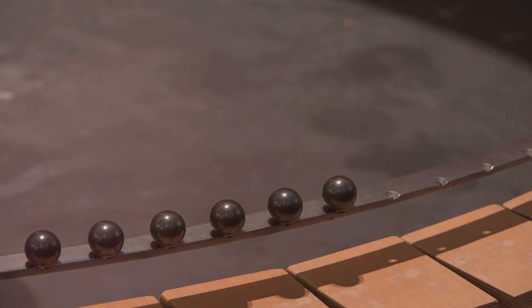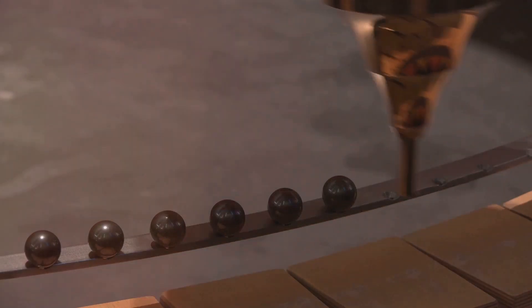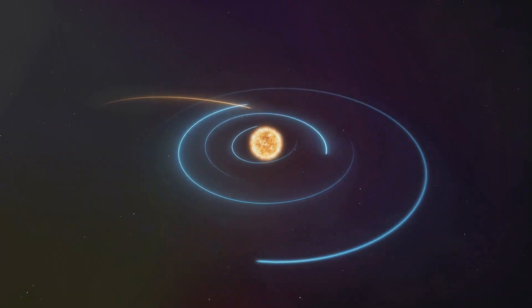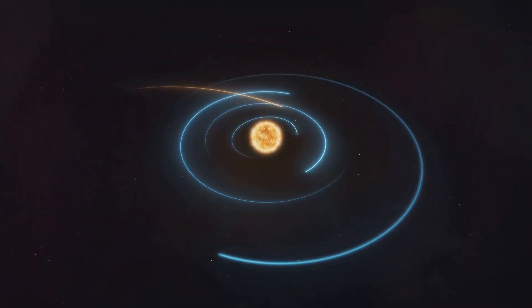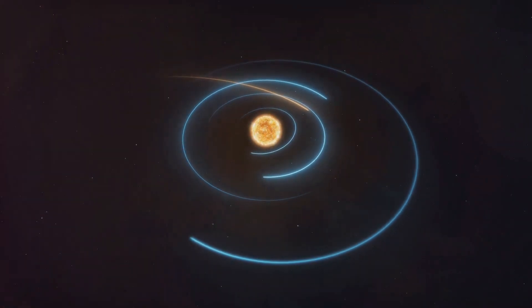Newton's law states that the gravitational force between two objects depends on their masses and the distance between them. The larger the masses and the closer they are, the stronger the gravitational pull. Pretty neat, right?